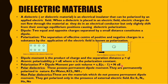Now, polar dielectrics are those which possess a permanent dipole moment — they are permanently polarized in nature. Examples include water, KCl, and NH₃. Non-polar dielectrics, on the other hand, do not possess a permanent dipole moment. They get polarized only in the presence of an external electric field. Examples include O₂ (oxygen), N₂ (nitrogen), He (helium), and Ne (neon).